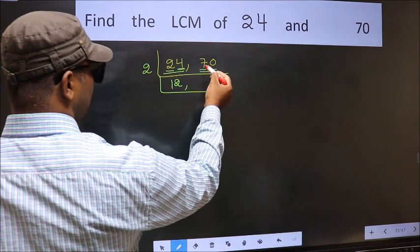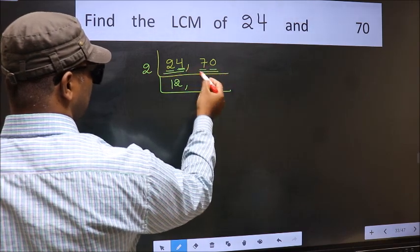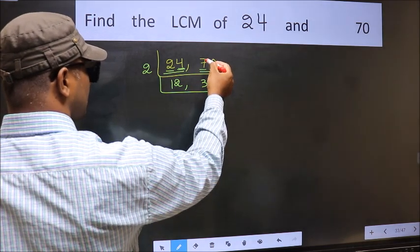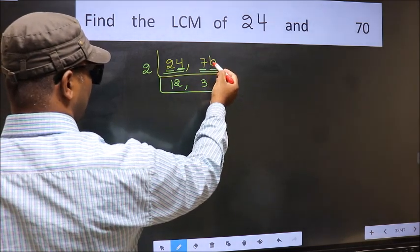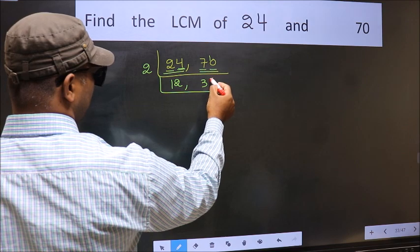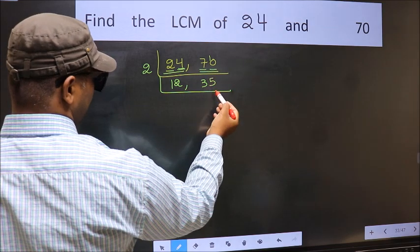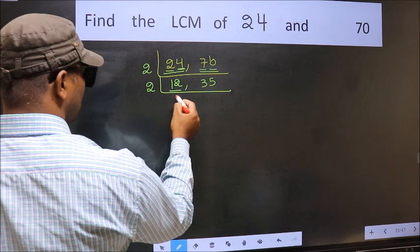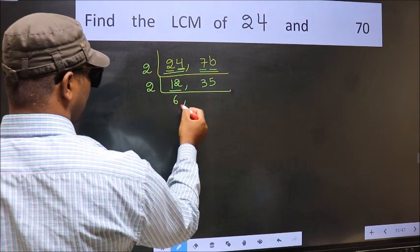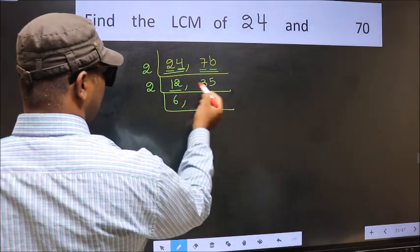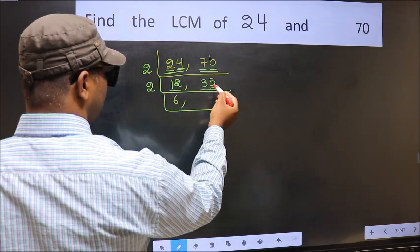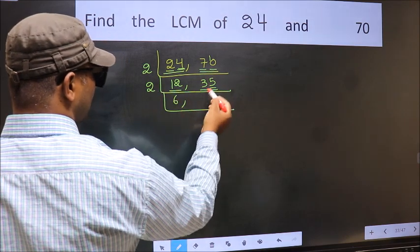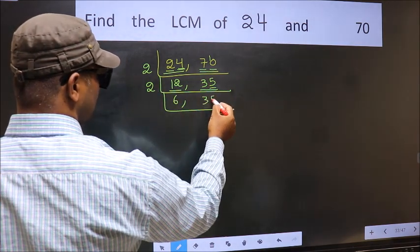First digit 7 — a number close to 7 in the 2 table is 2×3=6. 7−6=1, carry forward: 10. When do we get 10 in the 2 table? 2×5 is 10. Now here we have 12 — 2×6 is 12. The other number is 35; last digit 5, not divisible by 2, so we write it down as it is.